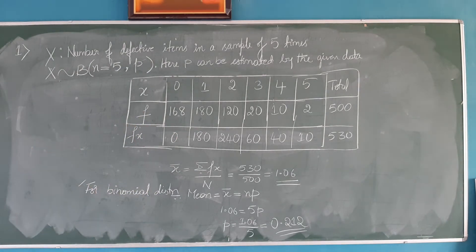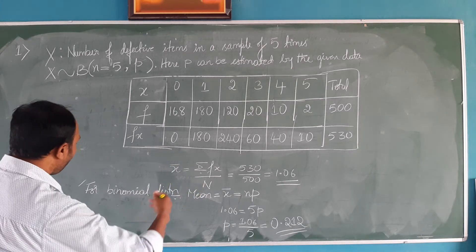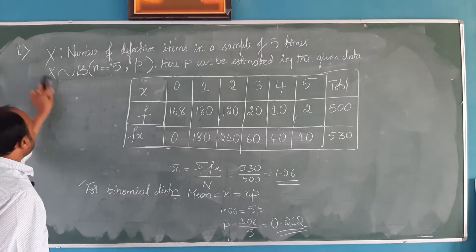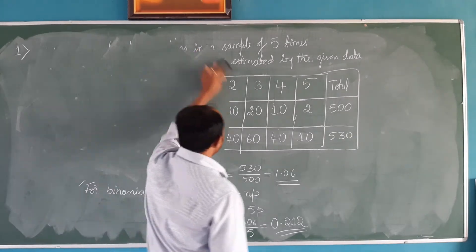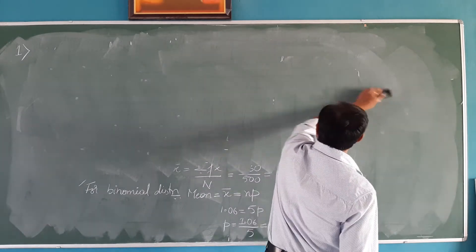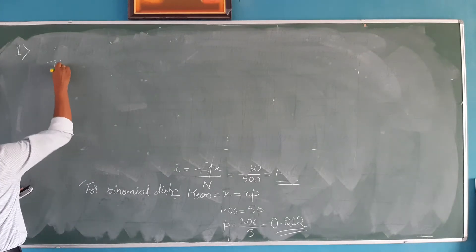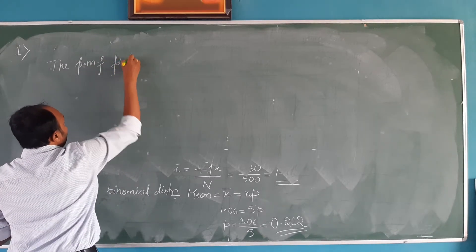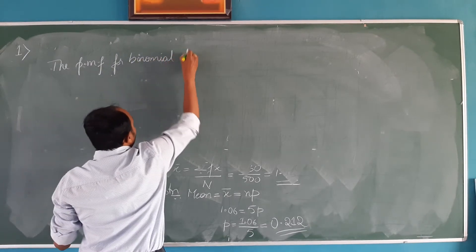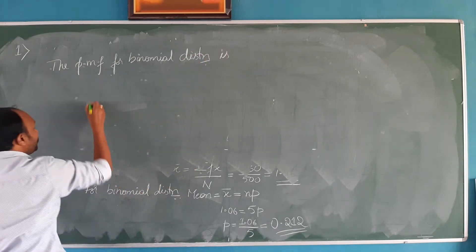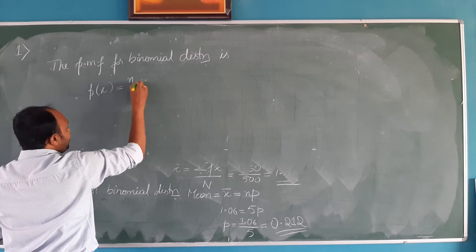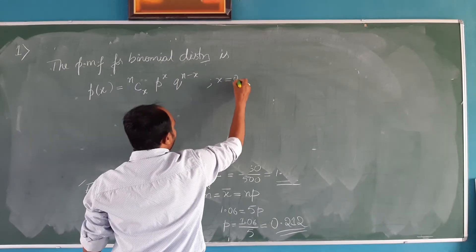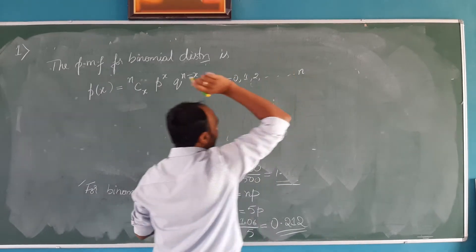The first half of the problem is done. Next, we need to fit a binomial distribution — we need to come up with a binomial distribution fit. We need to come up with a probability mass function. Let us write the probability mass function now. What is the probability mass function for binomial distribution? The PMF for binomial distribution is P(X) = nCx * p^x * q^(n-x), where x can take values 0, 1, 2, ..., n in general form.